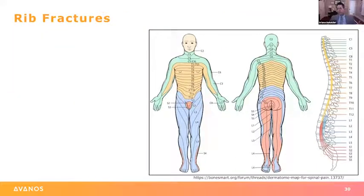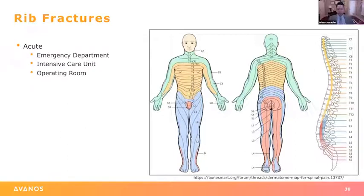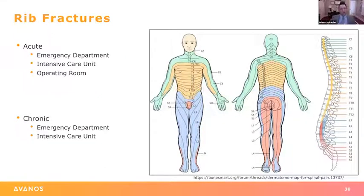Rib fractures have been a huge, huge area where ESP catheters help. Back in residency we were doing epidurals for rib fractures — obviously there are lots of issues with that, particularly with anticoagulation. We moved to paravertebral blocks, which are more difficult, more time consuming, more painful, and also have anticoagulation concerns. About a year and a half ago we converted to doing ESP catheters for all of our rib fractures — acute rib fractures in the ED, ICU, or operating room. Some chronic pain doctors are even doing these for chronic post-rib fracture pain and chronic post-thoracotomy pain.